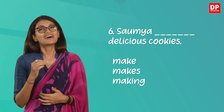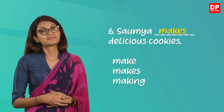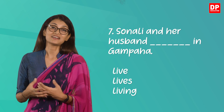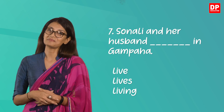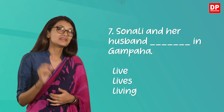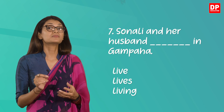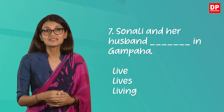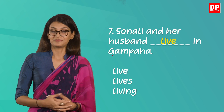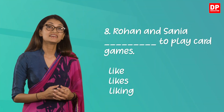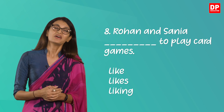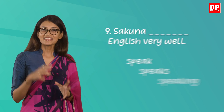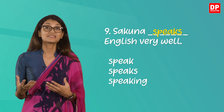Question six: 'Saumya blank delicious cookies.' The answer should be 'makes.' Question seven: 'Sonali and her husband blank in Gampaha.' Remember that it's Sonali and her husband, so the verb should be conjugated for the third person plural — the answer is 'live.' Question eight is similar: 'Rohan and Sanya like to play card games.' Question nine: 'Sakuna speaks English very well.'